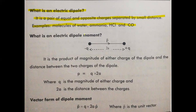Looking at the electric dipole diagram: it has two charges, minus q and plus q — equal and opposite charges. The charges are equal in magnitude but opposite in sign. They are separated by a small distance. That arrangement is called an electric dipole — it is a pair of equal and opposite charges separated by a small distance.